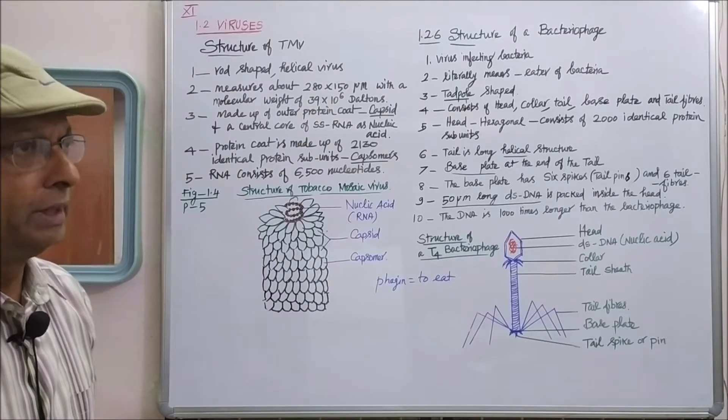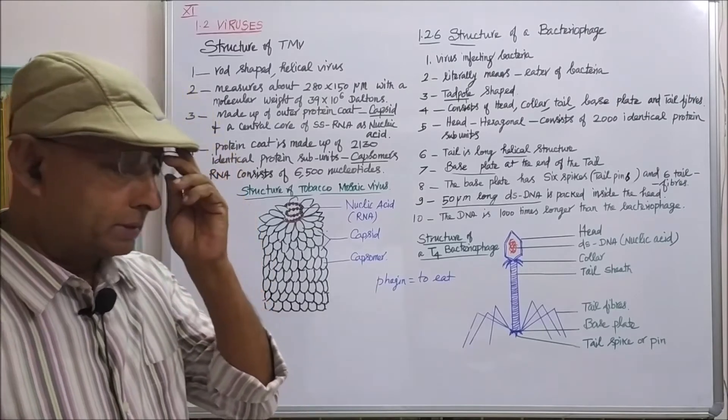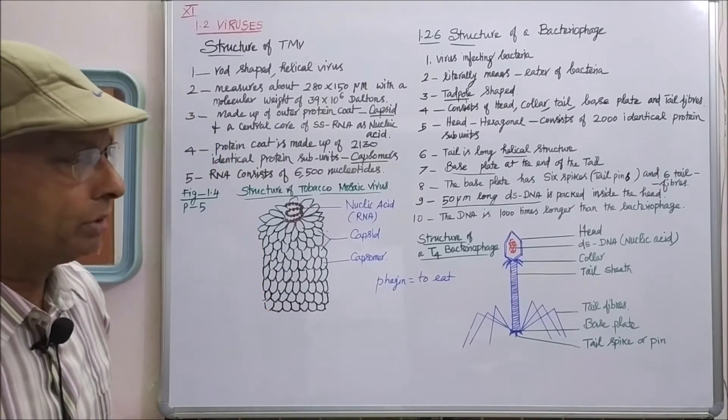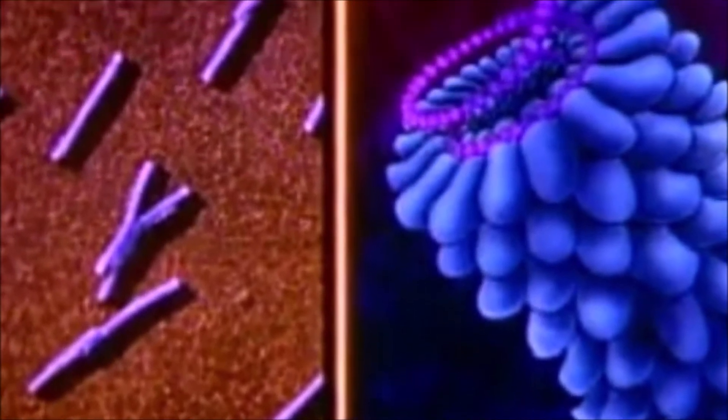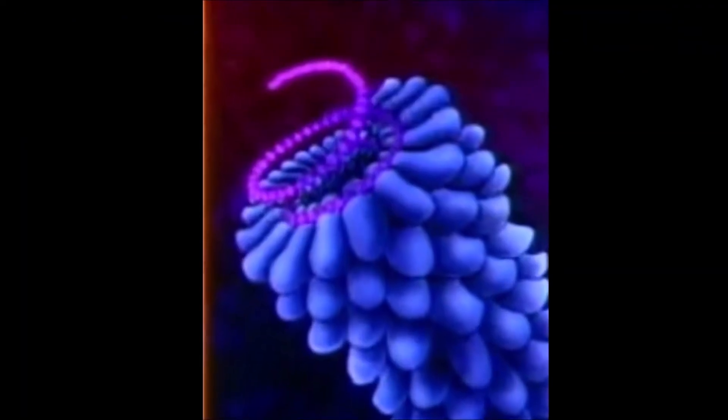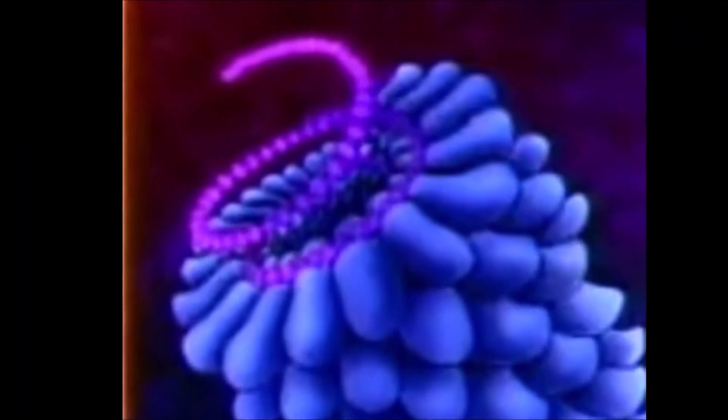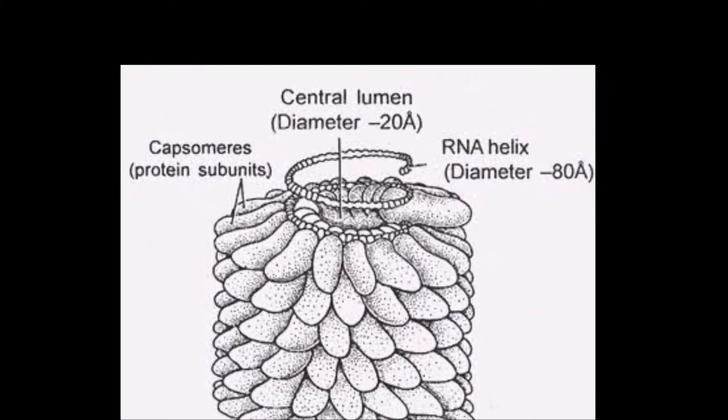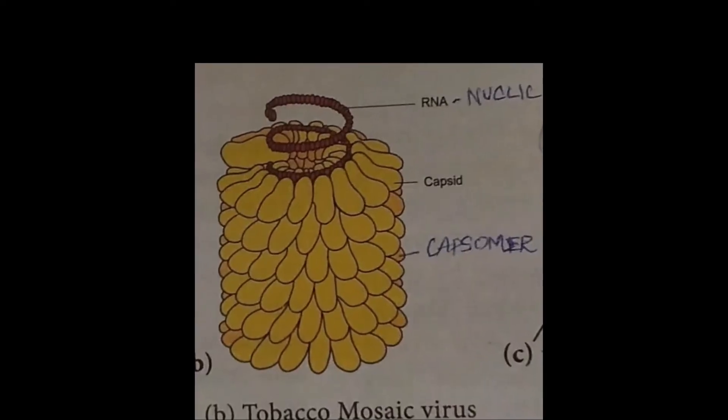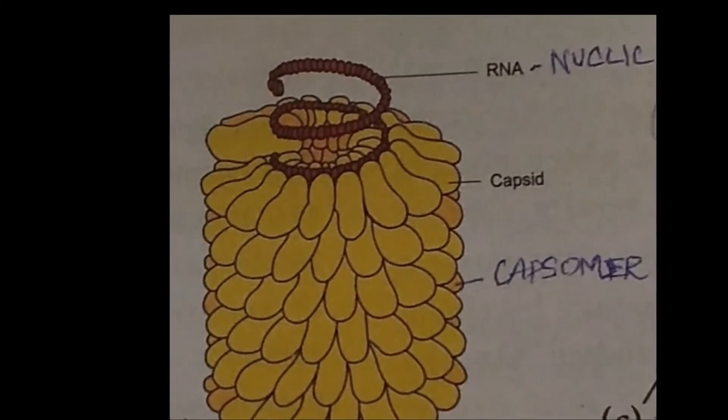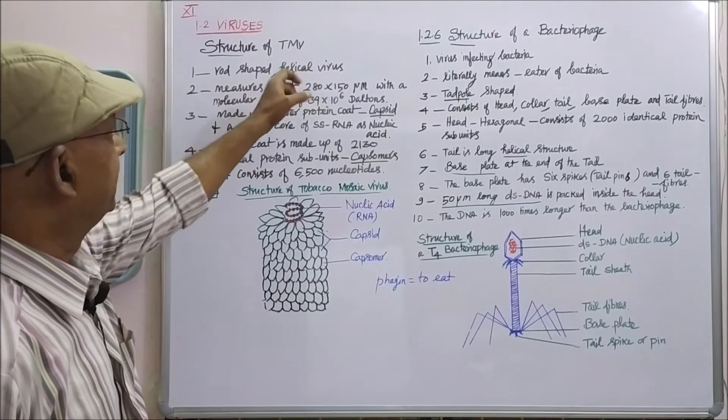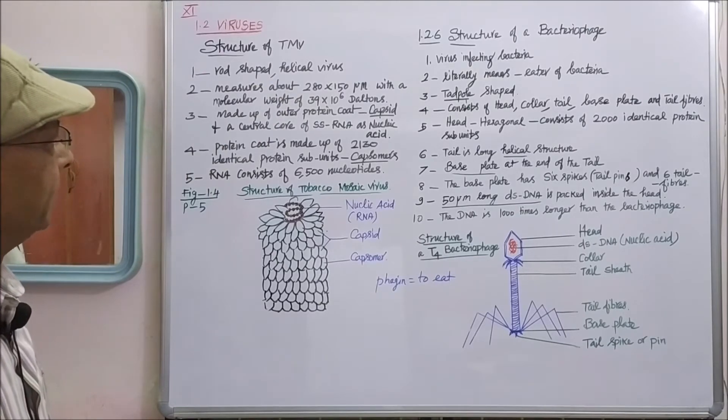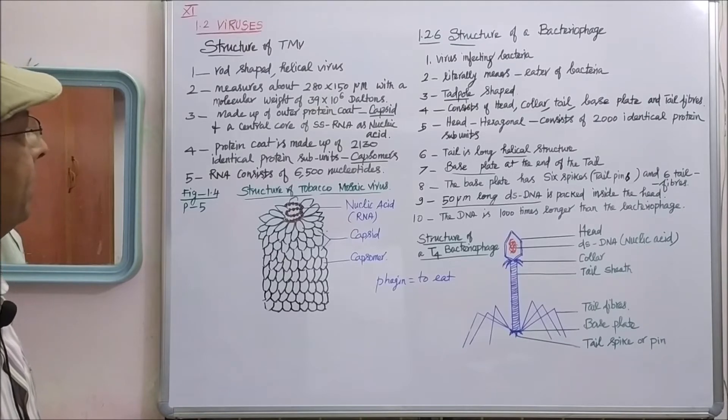Tobacco mosaic disease is caused by tobacco mosaic virus. The structure of the tobacco mosaic virus: it is a rod-shaped helical virus. It measures about 280 into 150 micrometer with a molecular weight of 39 into 10 to the power 6 Daltons.